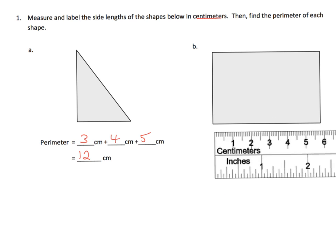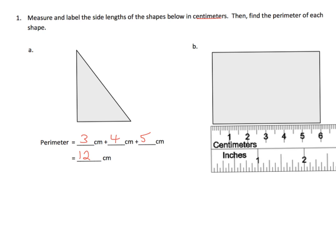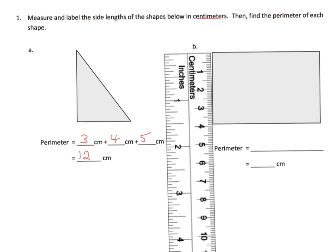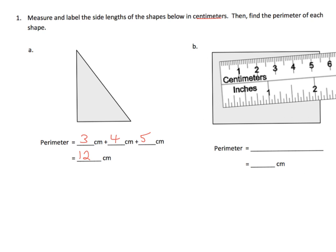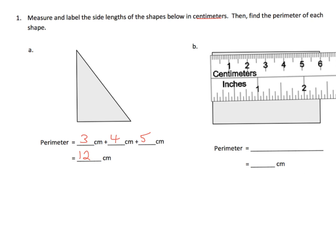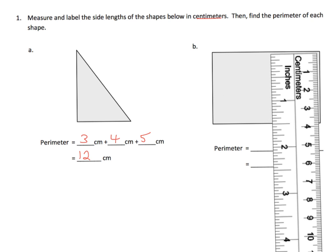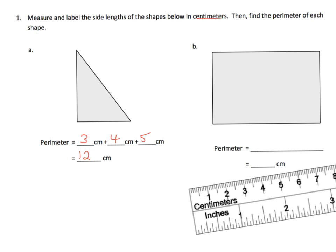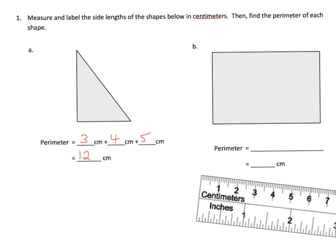For the rectangle, this length is about 6 and this one is about 4. Since it's a rectangle, the opposite sides match — so it's 6 and 4 again, reinforcing the meaning of rectangles. So we have 4 + 6 + 4 + 6, which equals 20 centimeters.